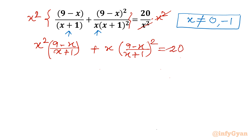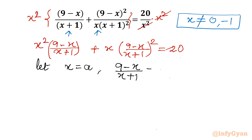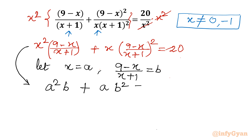Now I will use substitution. Let a = x and b = (9−x)/(x+1). Applying this substitution, the equation becomes a²b + ab² = 20. I can see ab is common, so taking ab as a factor: ab(a+b) = 20.